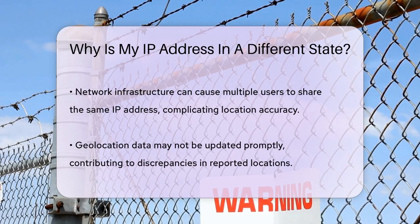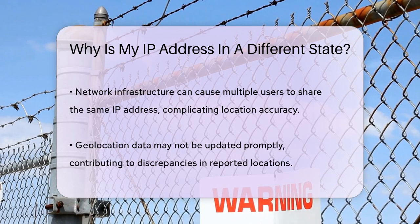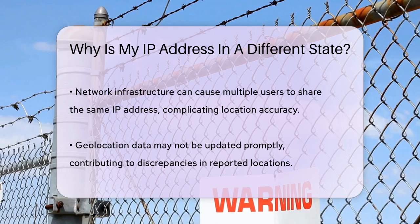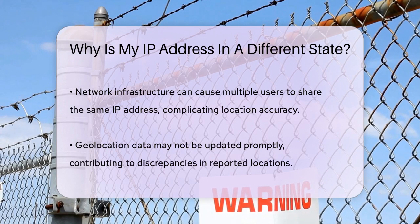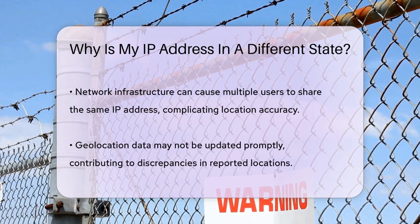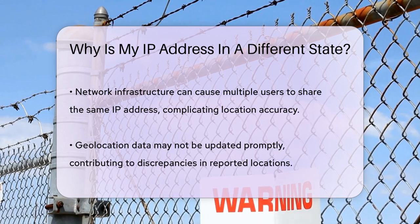Network infrastructure also plays a role. The configuration of networks can result in multiple users sharing the same IP address or using addresses that correspond to a different geographic area. This can further obscure the precise location data.